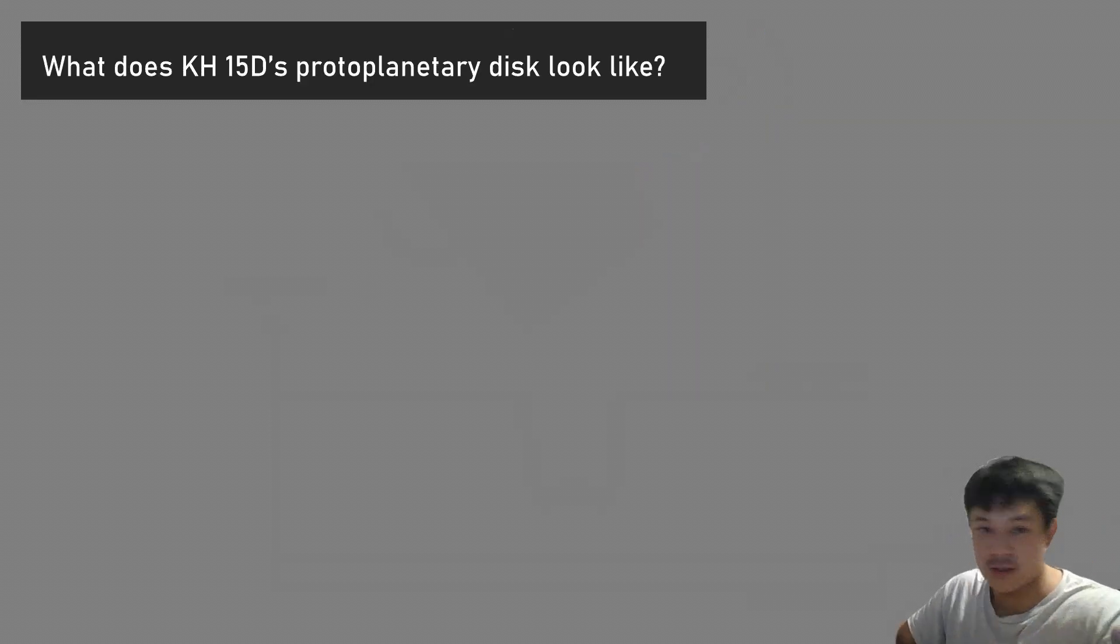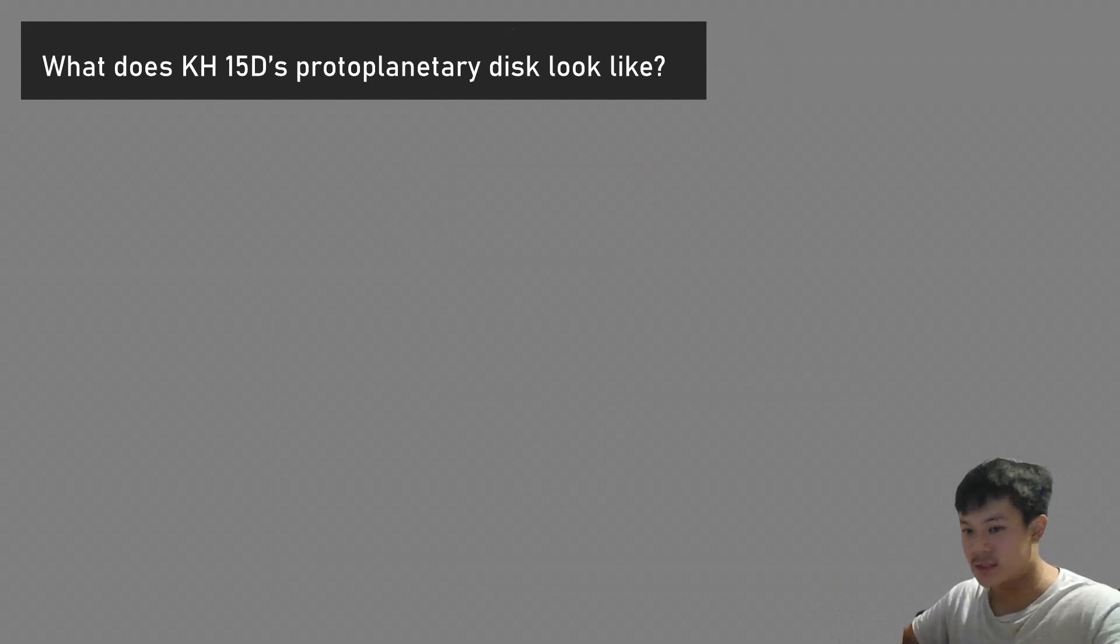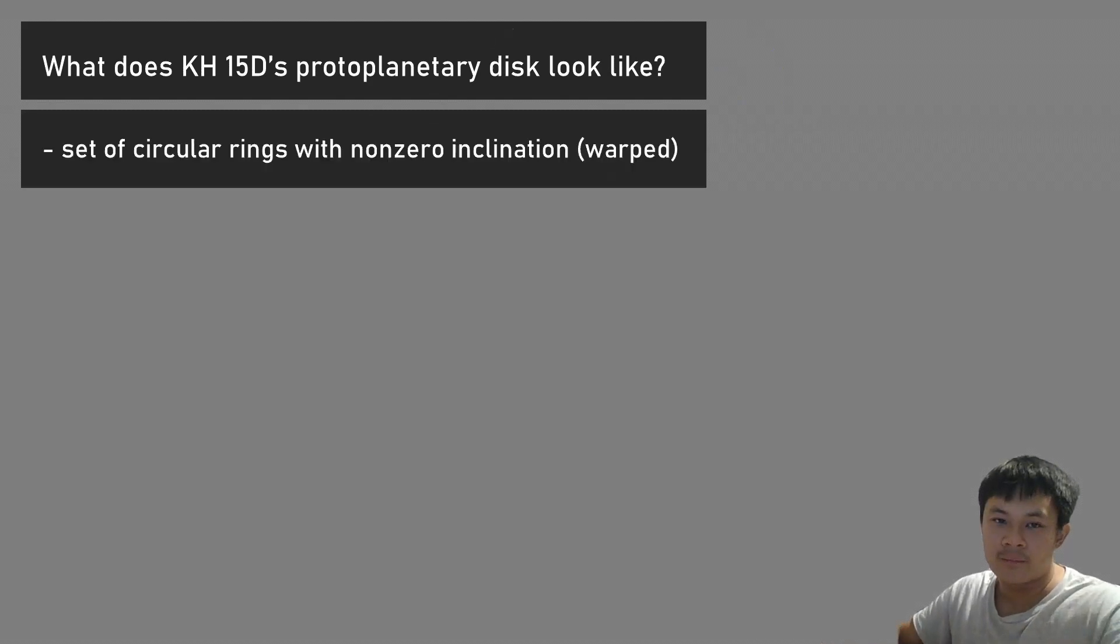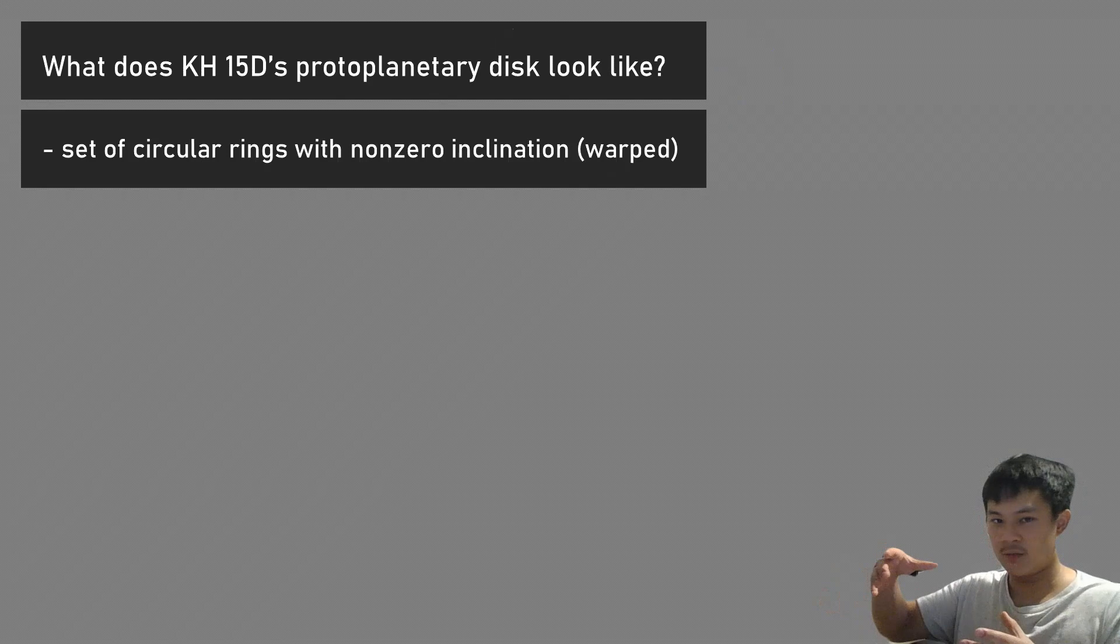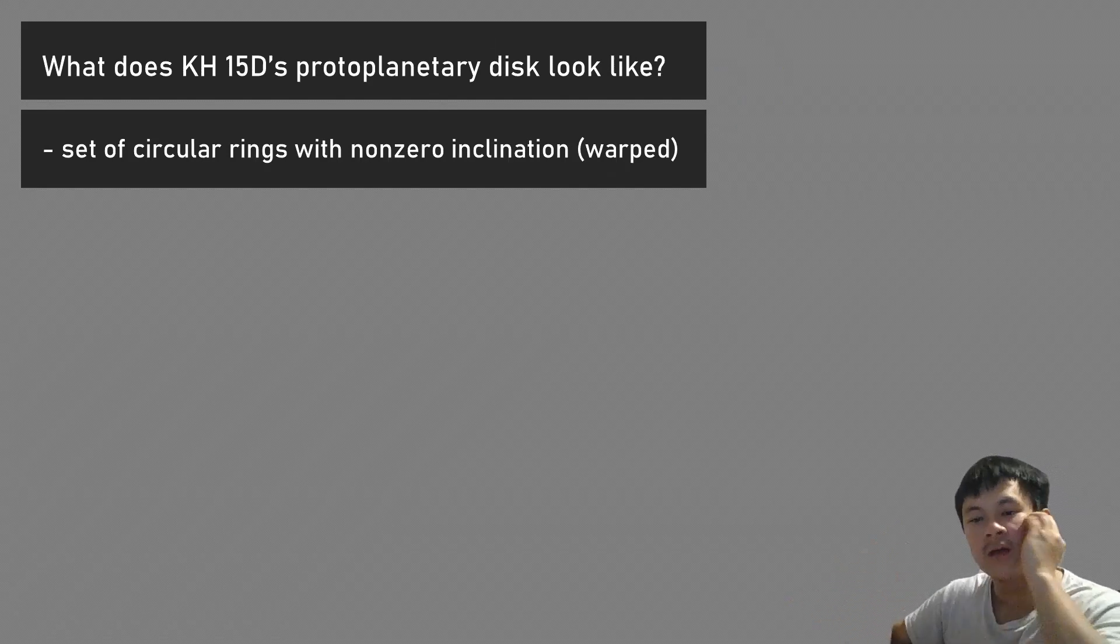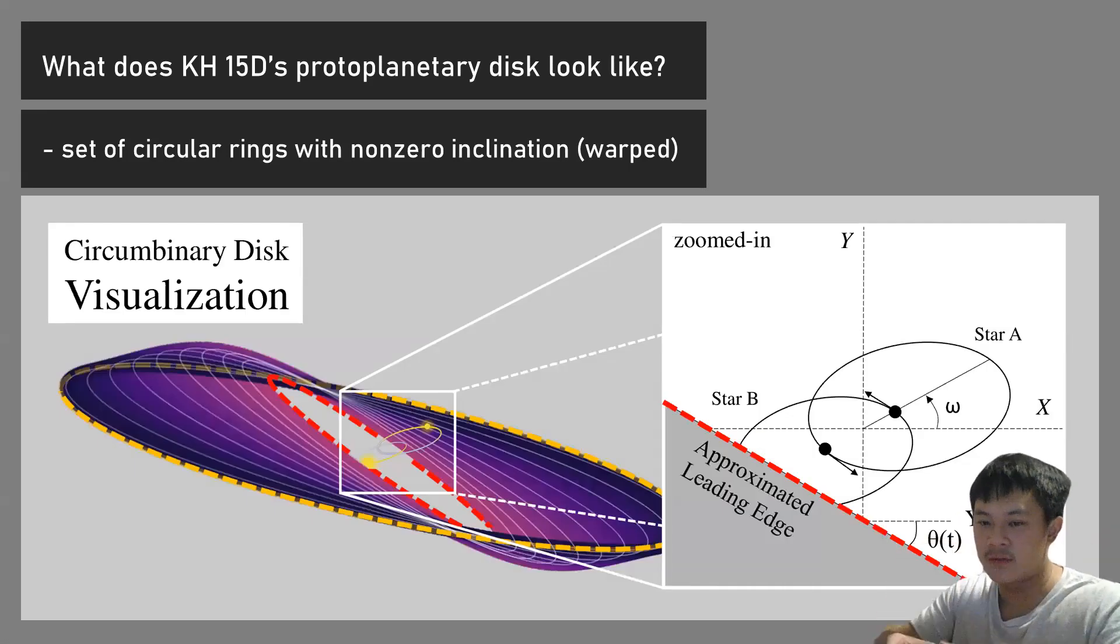Next, I'm going to explain what we think KH15D's protoplanetary disk could actually look like. We think it's a set of circular rings. This is a simple model. Between one ring and the next ring outside, there's a bit of an inclination or a warp, so it's not actually flat. Here's a visualization where the inner ring is this red dotted ring—it's actually circular, but we're looking at it from an angle, so it looks elliptical. As you go out, you have this outer yellow ring. On the right is an inset of a zoomed-in portion of a 2D sky projection of our model.